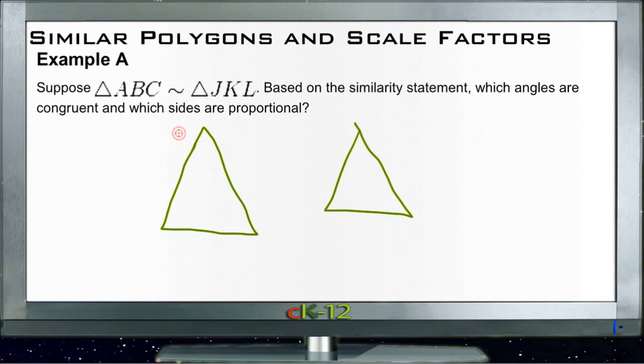This one is ABC and this one is JKL. Now, which angles are congruent and which sides are proportional? Remember, when we designate a triangle by letter like this, it is specifically in order. So when we have ABC and JKL, we know that those vertices are all in order. That means that A is congruent to J, B is congruent to K, and C is congruent to L.